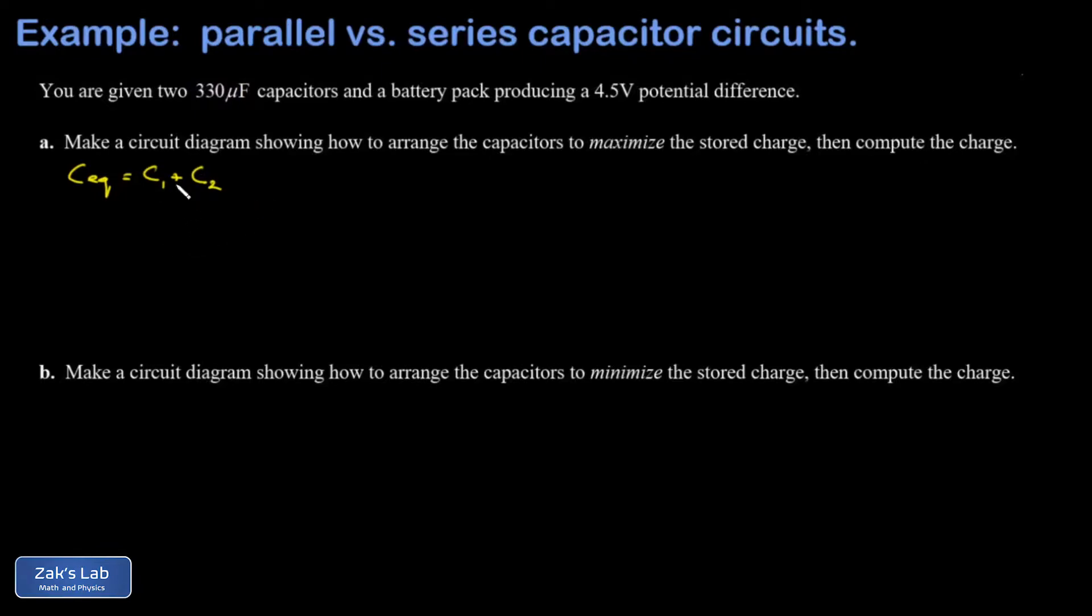So to show the circuit diagram that maximizes the stored charge, we just show a circuit diagram for two capacitors in parallel. There it is, two 330 microfarad capacitors connected in parallel. Again, those capacitances simply add, and we get an equivalent capacitance of 660 microfarads.